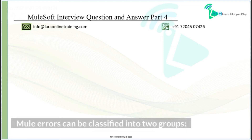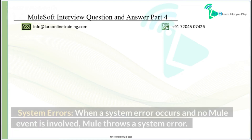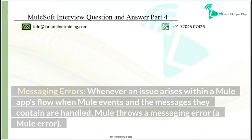Mule errors can be classified into two groups. System Errors: when a system error occurs and no Mule event is involved, Mule throws a system error. Messaging Errors: whenever an issue arises within a Mule app's flow when Mule events and the messages they contain are handled, Mule throws a messaging error, a Mule error.